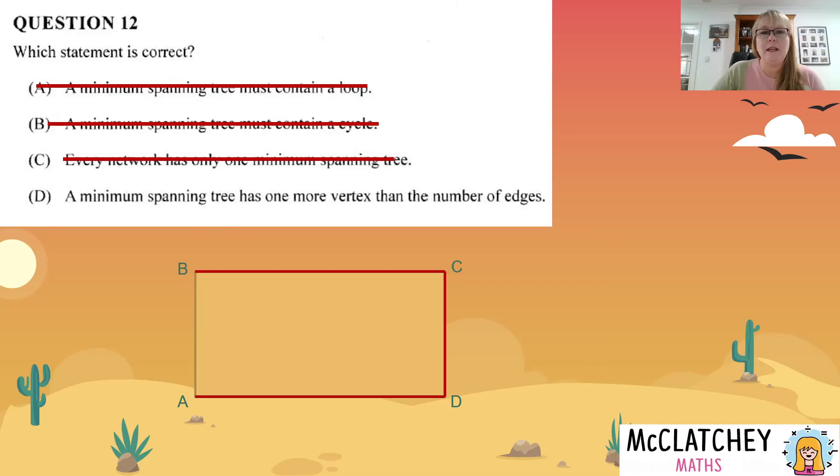So a minimum spanning tree has one more vertex than the number of edges. So just looking at this network, A, B, C, D at the moment, we know there's four vertices and there are four edges, but when we make the minimum spanning tree, we drop that edge that makes the loop. So therefore it's got four vertices and three edges, which is one more. So D is the correct answer.